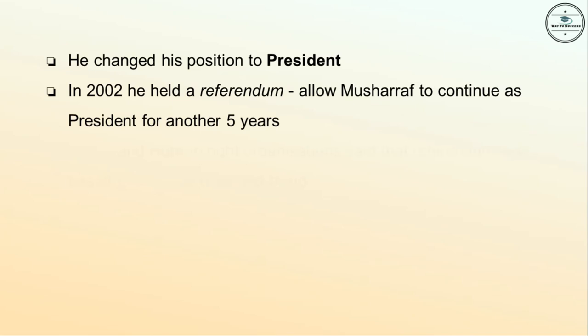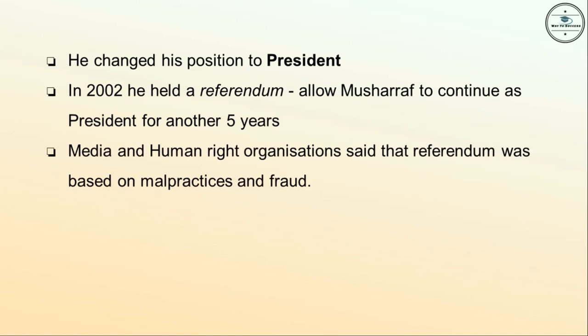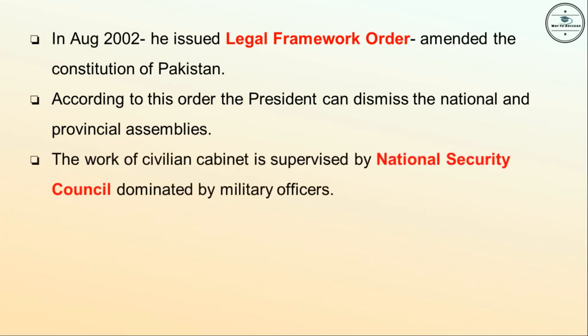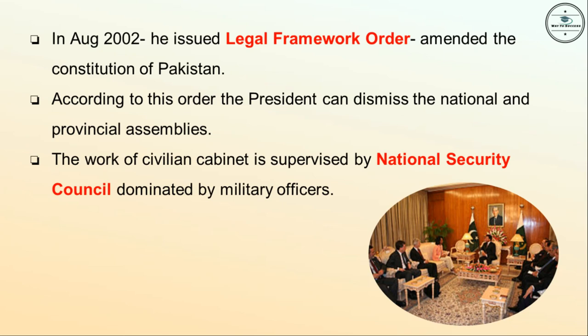Later, Musharraf changed his position to President. In 2002, he held a referendum that allowed him to continue as president for another five years. Media and human rights organizations said that the referendum was based on malpractices and fraud. In August 2002, he issued the Legal Framework Order that amended the constitution of Pakistan, giving the president power to dismiss the national and provincial assemblies.